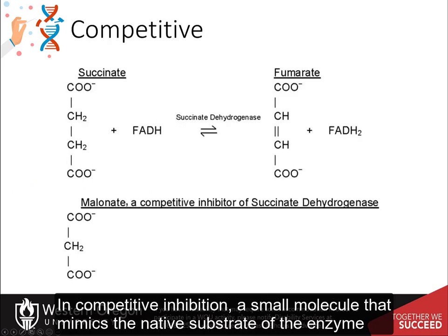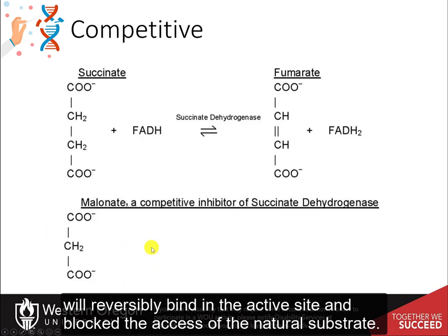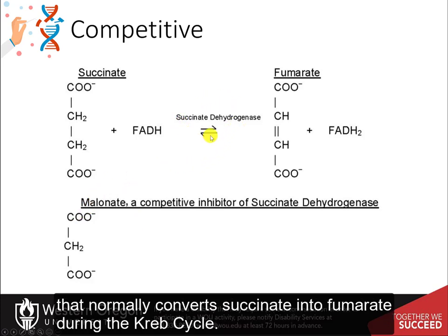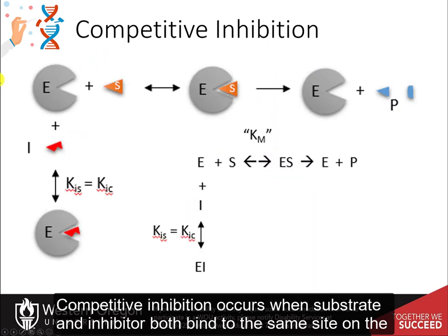In competitive inhibition, a small molecule that mimics the native substrate of the enzyme will reversibly bind in the active site and block the access of the natural substrate. For example, malonate is a competitive inhibitor of the succinate dehydrogenase enzyme that normally converts succinate to fumarate during the Krebs cycle.